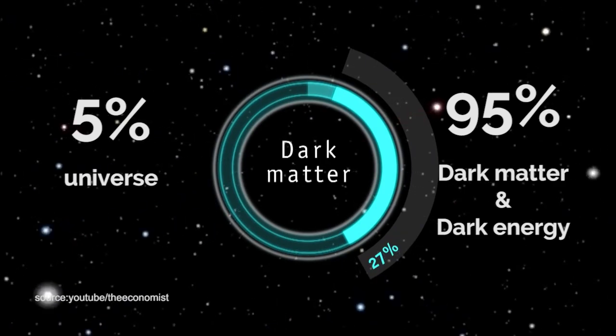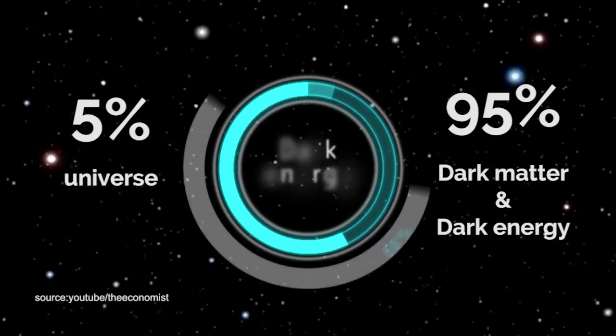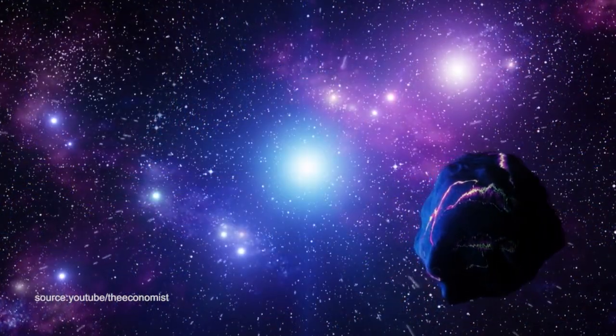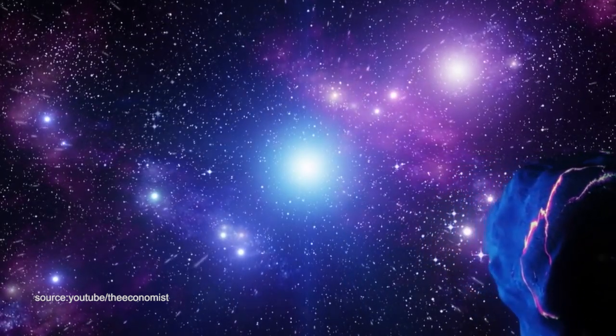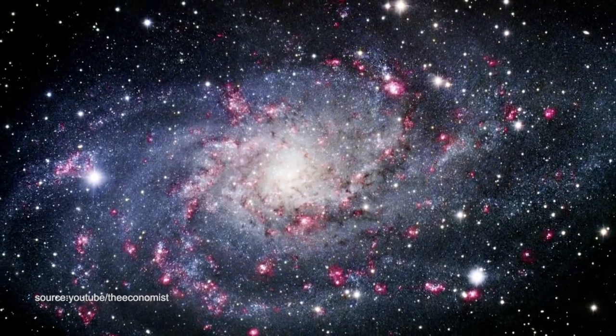All we know for now is that the 95% is made up of two mysterious forces, dark matter and dark energy. Dark matter, first discovered in 1933, seems to work as a kind of glue. It binds galaxies, clusters, and even superclusters together, so all that stardust doesn't go randomly flying away in all 360 directions.